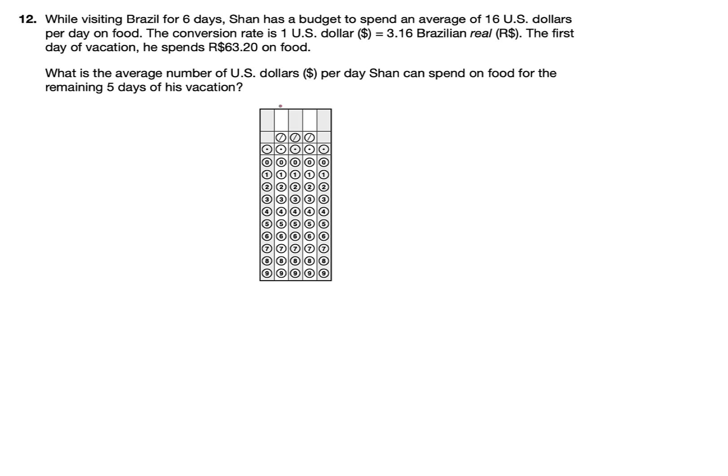Now we have a word problem. While visiting Brazil for 6 days, Shan has a budget to spend an average of $16 per day on food. The conversion rate is $1 equals 3.16 Brazilian real. The first day on vacation, he spends R$63.20 on food. I'm going to use the calculator for this section.